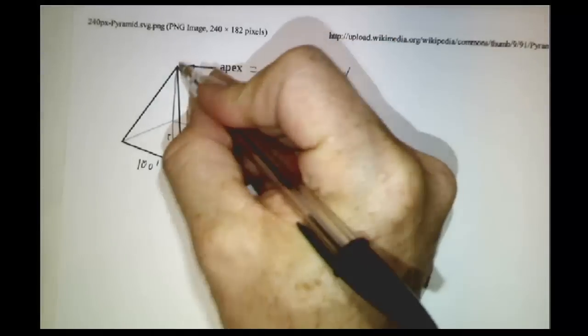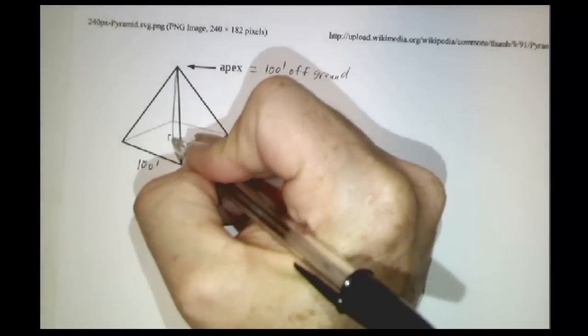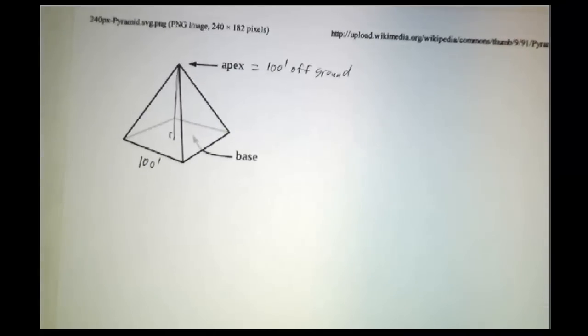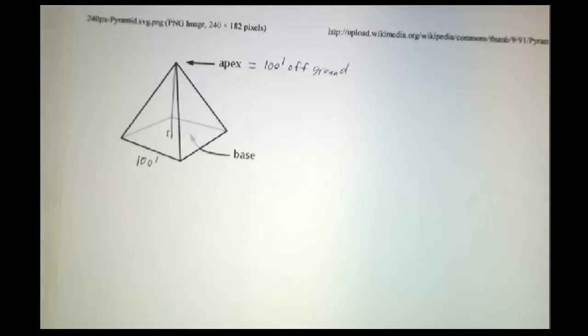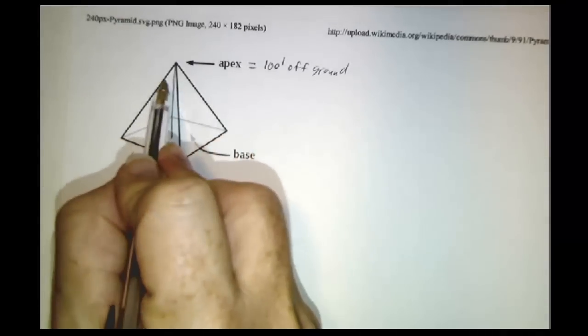So not the slant distance, but the vertical distance straight down to the middle, is 100 feet. What's the volume of the pyramid? The way we're going to get this, in this case, we're going to slice the pyramid horizontally.